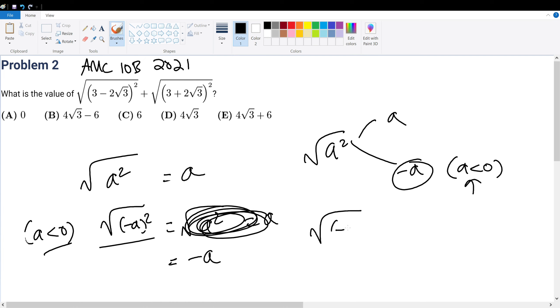So for instance, if I have the square root of negative 3 squared, that's equal to the square root of 9, that is equal to 3, right? But that's also equal to negative of negative 3. Now remember, this quantity right here is a, and this quantity right here is a, so this is equal to negative a, which is why we have this case.